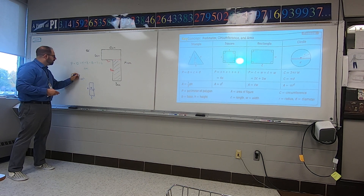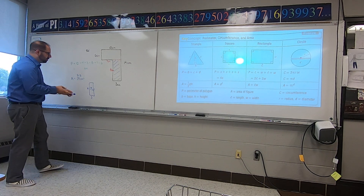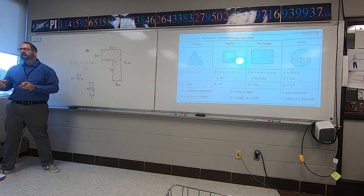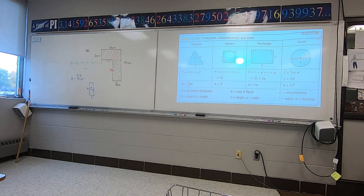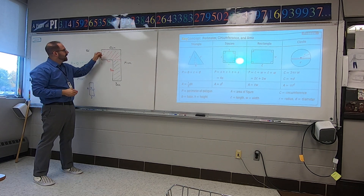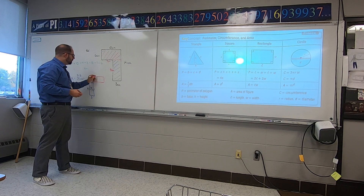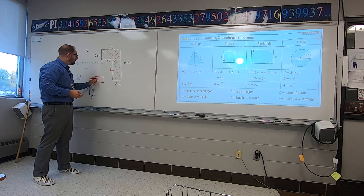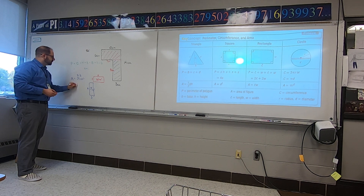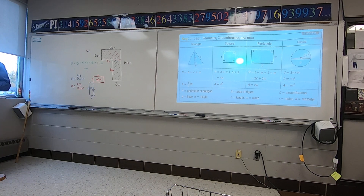Then the other piece — the one in red up here — the dimension of that is 6 by 10. The 6 is the width, the 10 is the length — base and height, however you want to say it. The whole box is 6 by 10. When you multiply those together you get 60, and that would also be centimeters squared. So that top area is 60 centimeters squared.